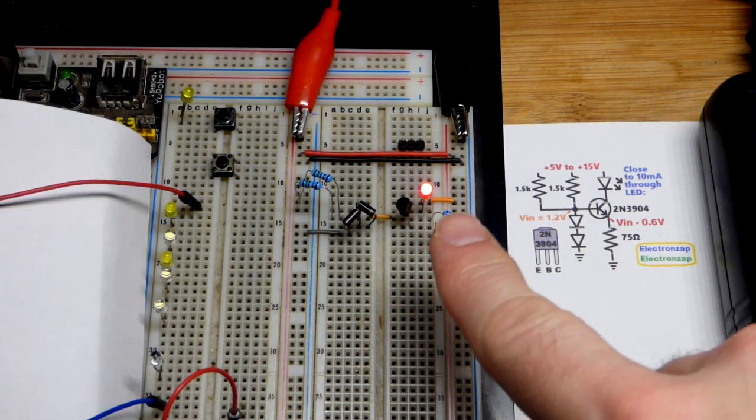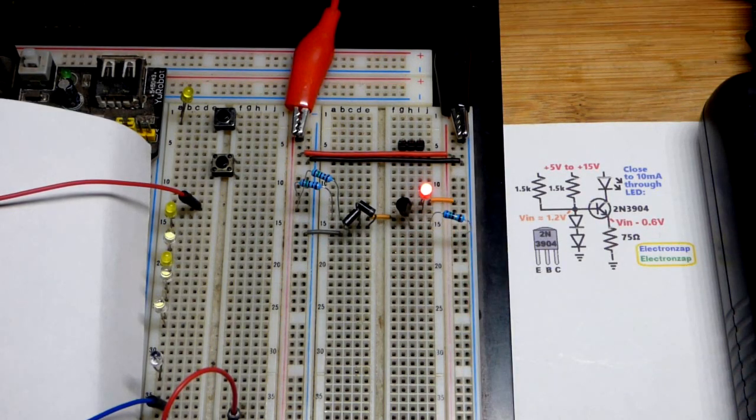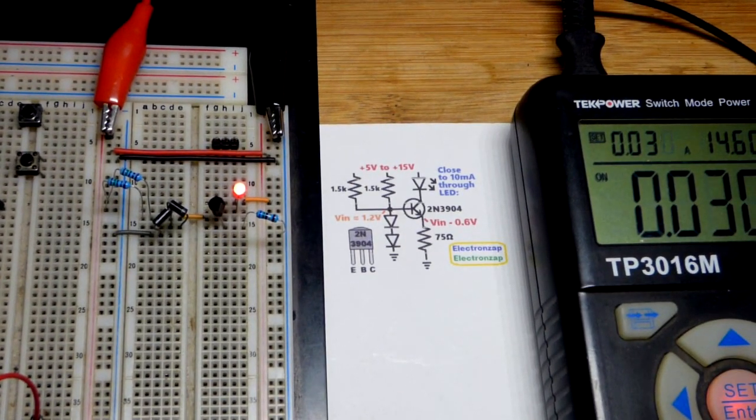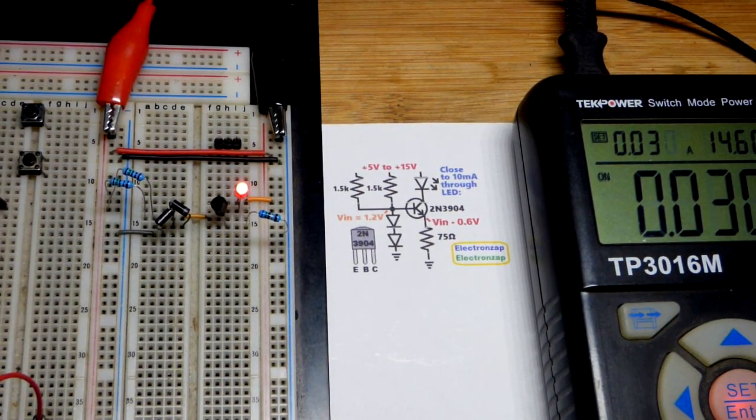So now we have a circuit where we set a current through that LED. It's about 10 milliamps of current, but we made this circuit so it can handle relatively high voltages up to about 15 volts.